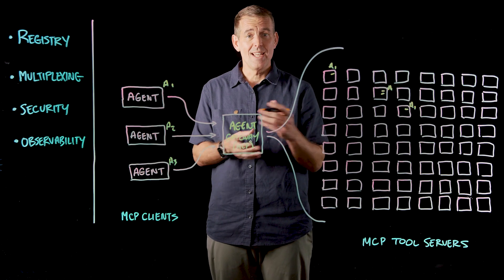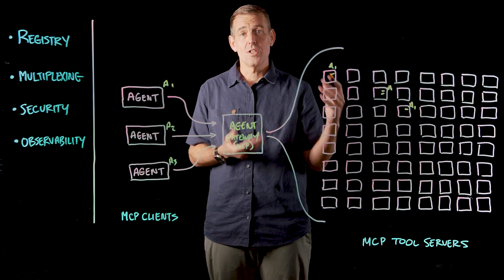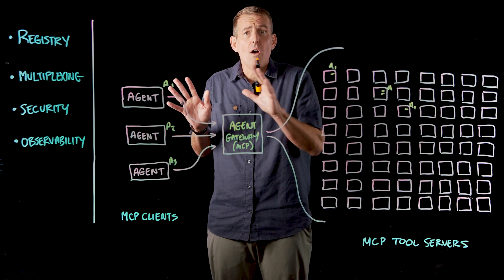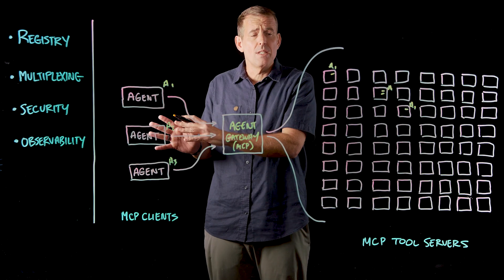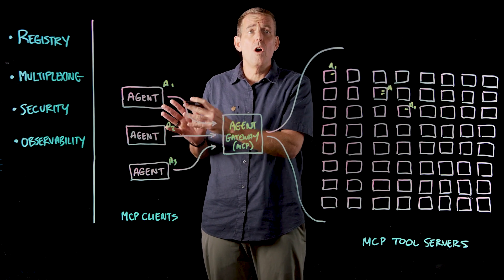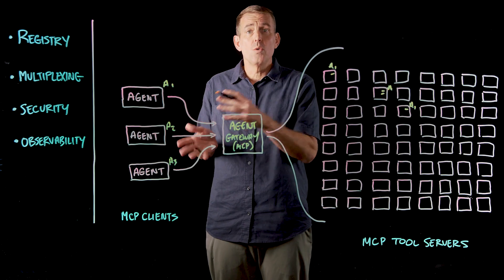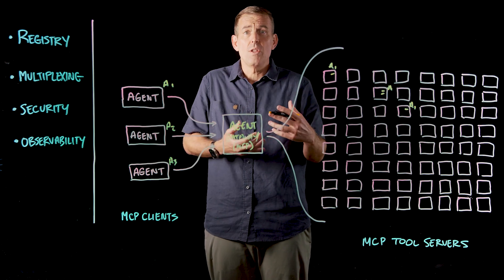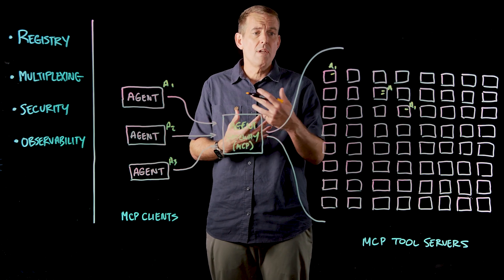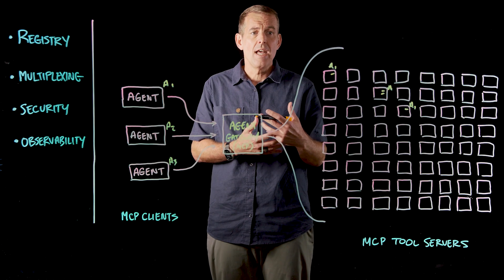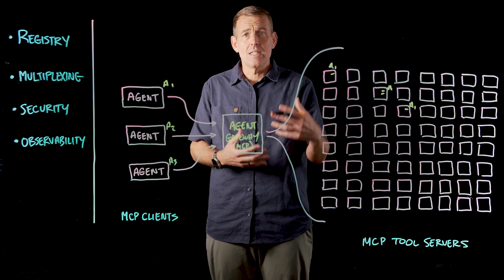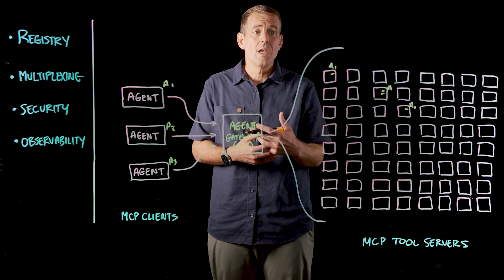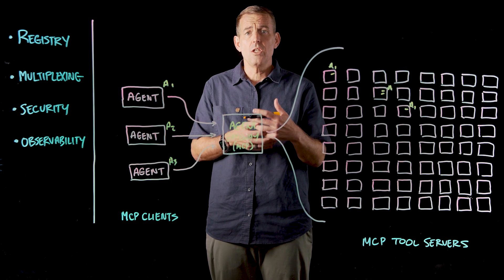Speaking of tools that agents shouldn't be using — that's a great segue into security as a concern. This landscape is all over the place. It ranges from the original MCP spec where each tool server was a full OAuth authorization server, to tool servers designed for local computer use where they were never meant to be shared by teams, with baked-in credentials and no external security at all. From a platform perspective, I need to bring consistency and uniformity to that to make it easy for agent developers to integrate with tools, while implementing security uniformly across the board.